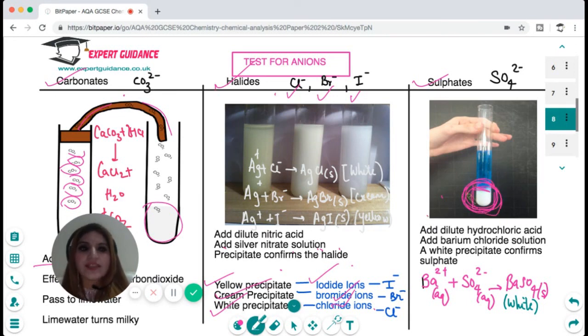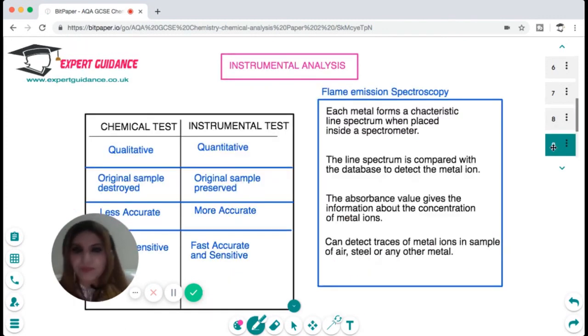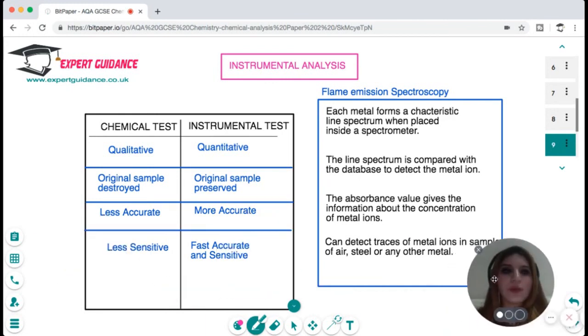For the test of sulfate, we add dilute hydrochloric acid and then add barium chloride solution and we see a white precipitate. There's a white precipitate because barium and the sulfate ions combine to form barium sulfate which gives a white precipitate. You should know all these ion tests and how we perform them. Next is what is instrumental analysis. Whatever we did so far was a chemical test which was qualitative.